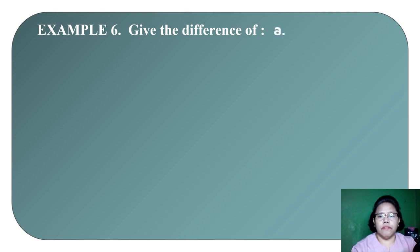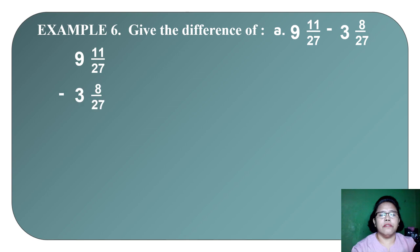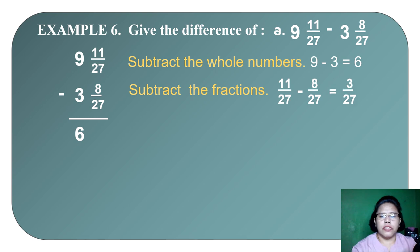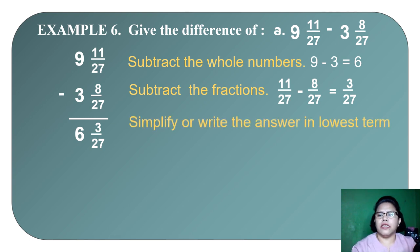Another example: give the difference of Letter A — 9 and 11 twenty-sevenths minus 3 and 8 twenty-sevenths. Arrange vertically. Subtract whole numbers: 9 minus 3 equals 6. Subtract fractions: 11/27 minus 8/27 equals 3/27. The answer is 6 and 3/27. However, 3/27 is divisible by 3, so reduce to lowest term: 3 ÷ 3 = 1 and 27 ÷ 3 = 9. Final answer: 6 and 1/9.